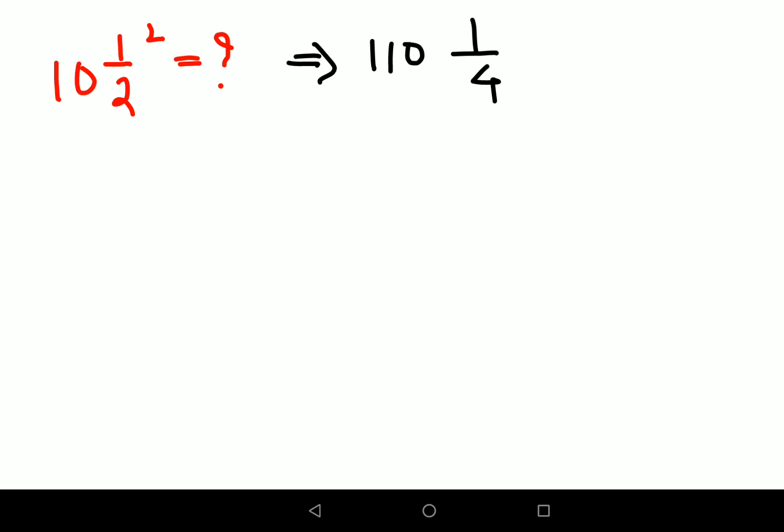No, that's absolutely not the case. I'll show you with the proper workings. We will first convert this mixed fraction into a proper improper fraction. All you have to do is multiply the denominator with the quotient. That is 2 into 10 gets you 20, plus 1 upon 2, the whole square.